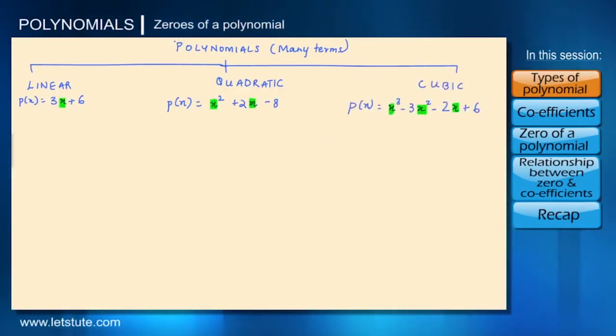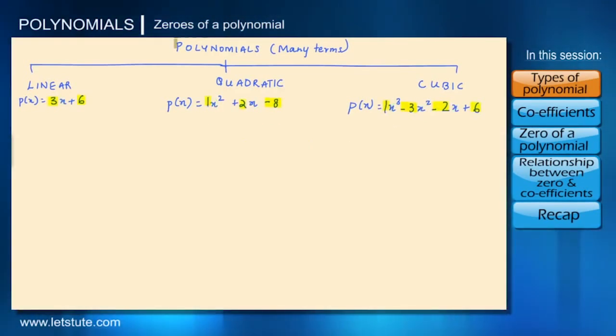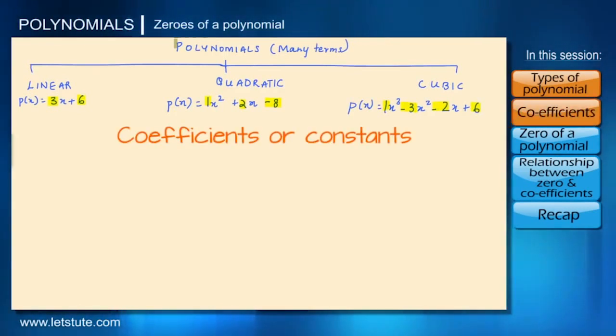Here the letters that we see have unknown values and they are called variables. Here we have just one variable, that is x. The numbers that we see before the variables are called coefficients or constants.